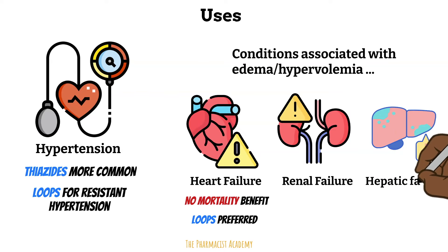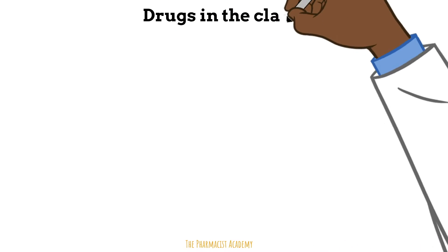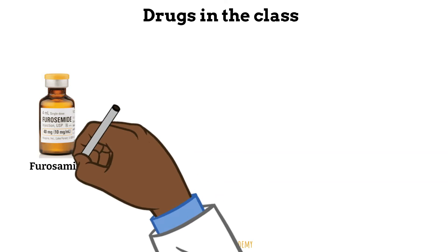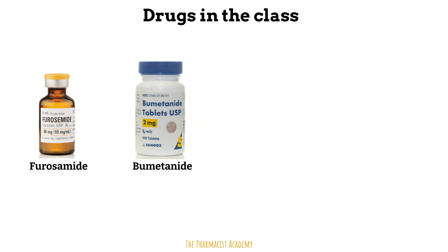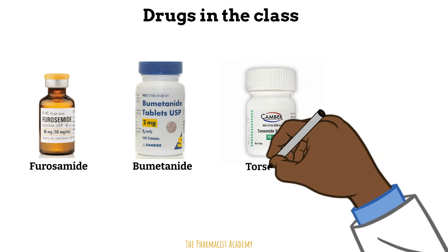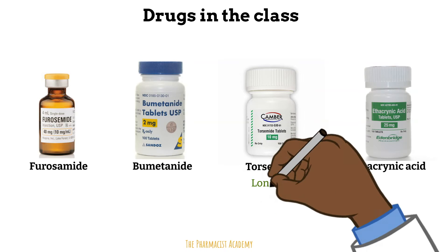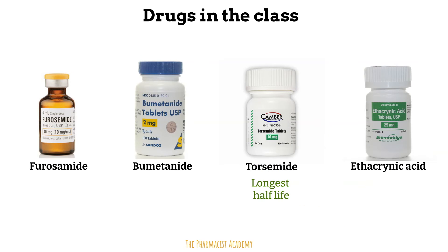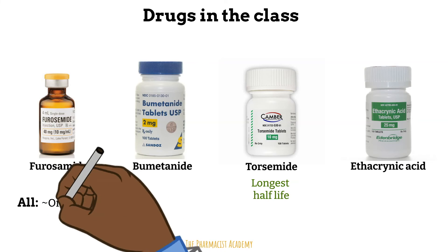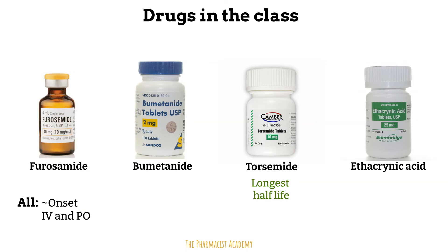Hepatic failure slows the regular flow of blood through the liver, which increases the pressure in the vein that brings blood to the liver, causing fluid to leak outside of the tissues. Now, here are some examples of drugs in the class: furosemide, bumetanide, torsemide, and ethacrynic acid. Out of all of these, torsemide has the longest half-life, but they all have the same onset of action and come in IV and oral formulations.